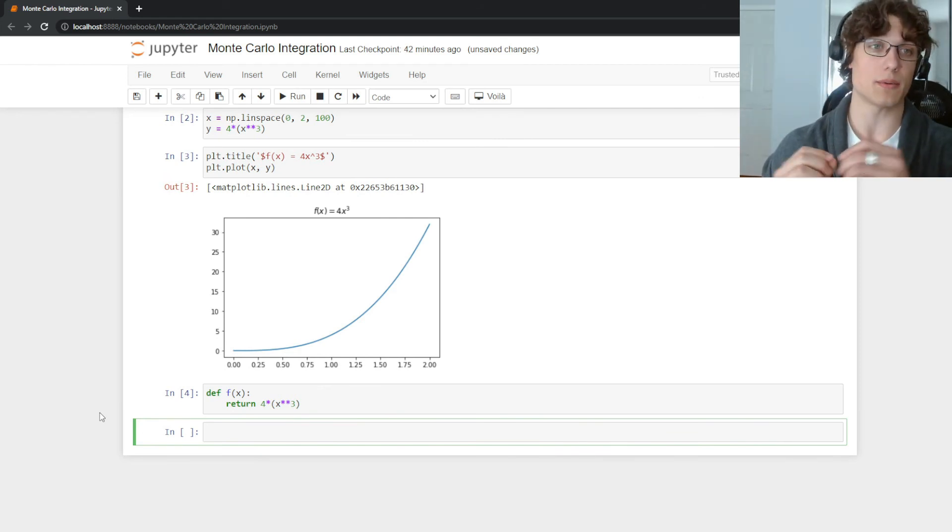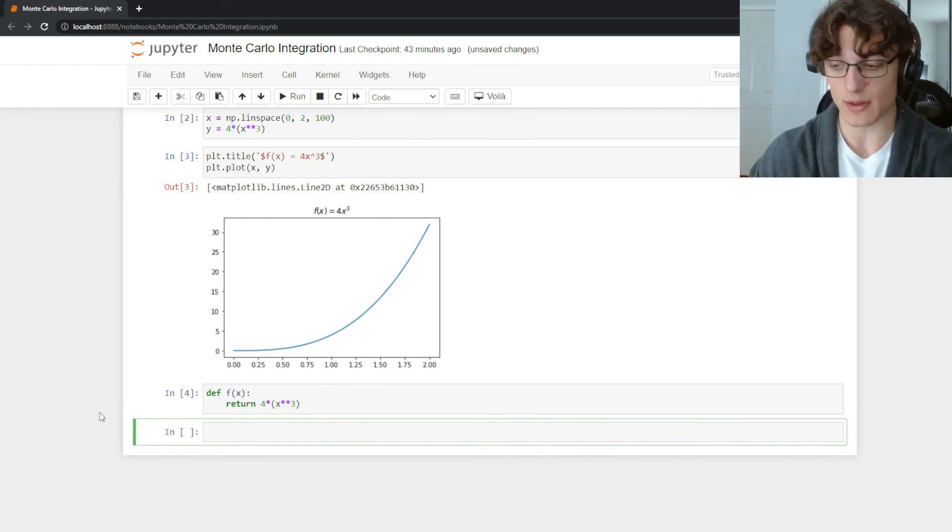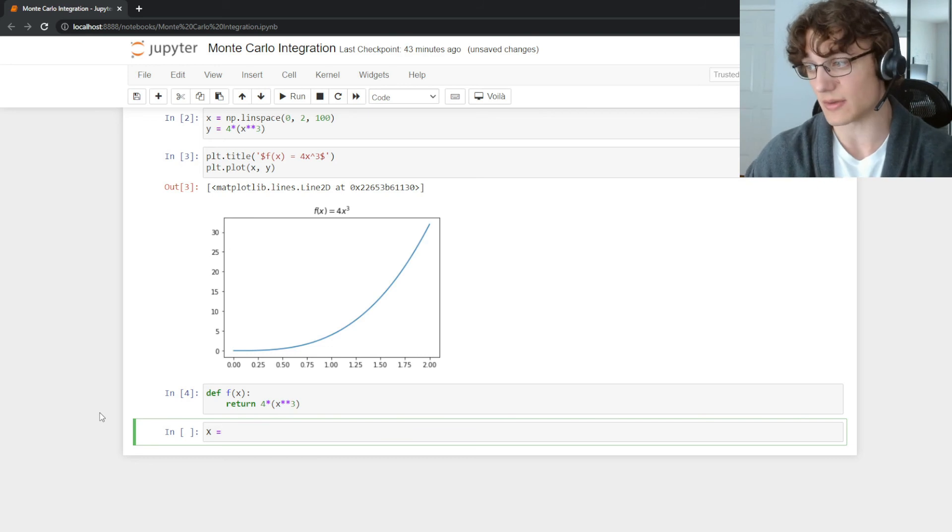Then we're going to randomly sample points in the domain 0 to 2 and we can very easily do that by defining capital X as being equal to np.random.uniform 0 to 2 and let's do 10,000 points.